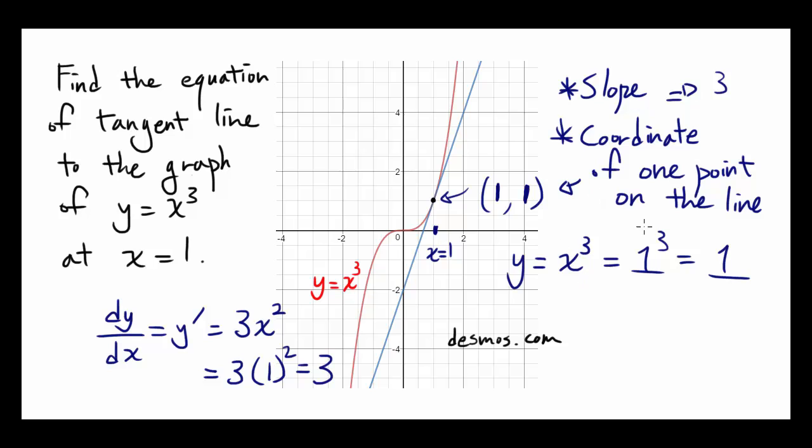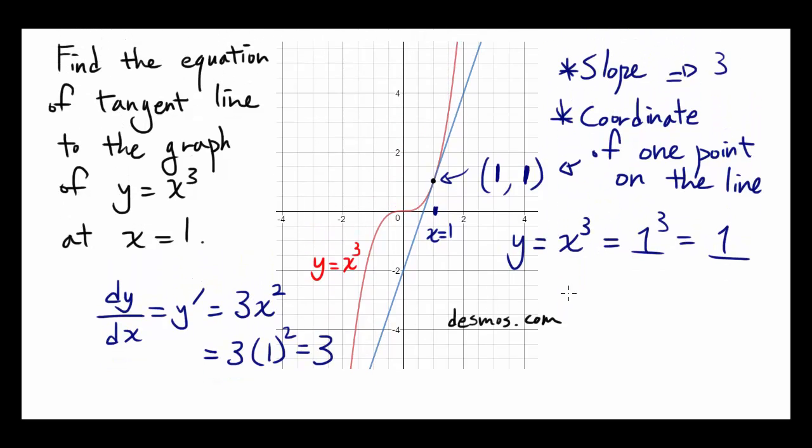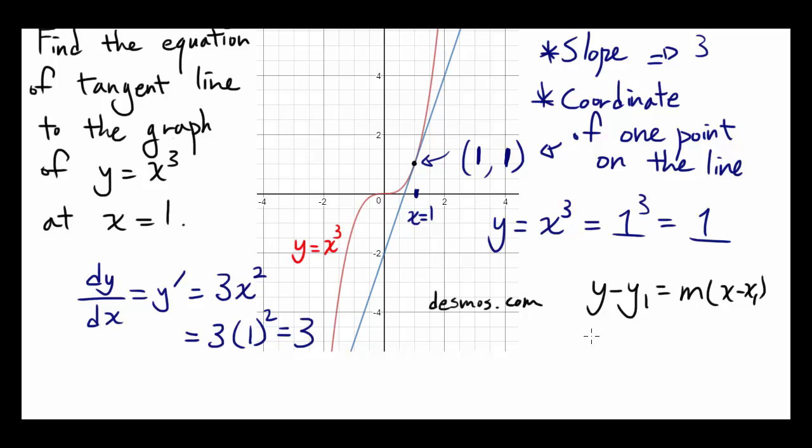So now, how do you find the equation of this line? You can just plug what we know into the point slope form of the line, which is y minus y1 equals m times x minus x1, where x1, y1 is the point on the line, and m is the slope.